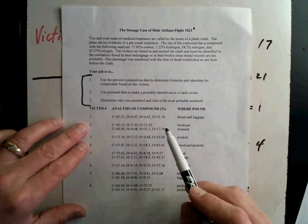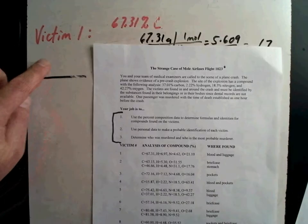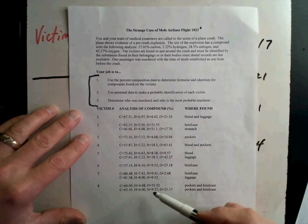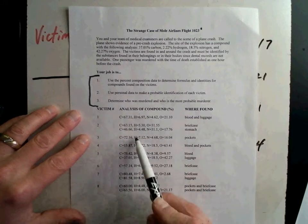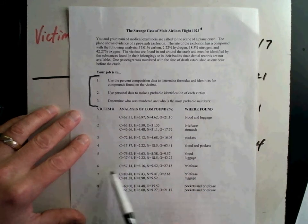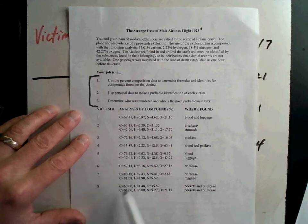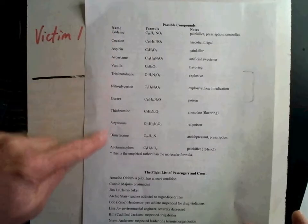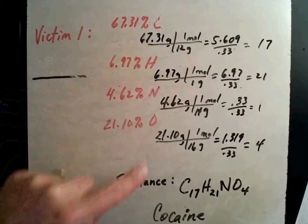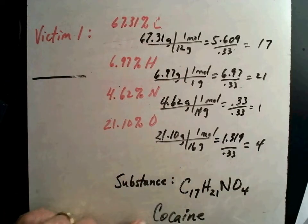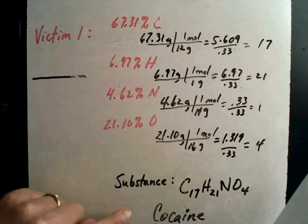And then what I'm going to do is, what I would do if I were you, is I can't fill in the victim's name right there. Do all the compounds first and find out. So victim two actually has two compounds. Victim three has one. Victim four has one. Victim five has two things on them. Six has one. Seven has two. Eight has two. Let me give you a big hint. I'm going to use all of these compounds one time.